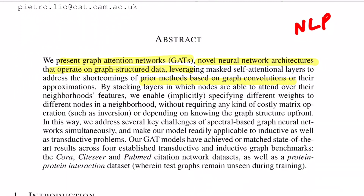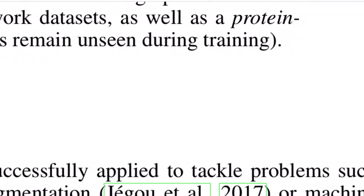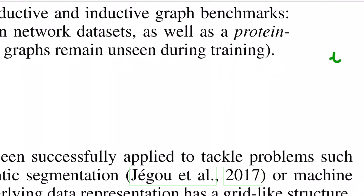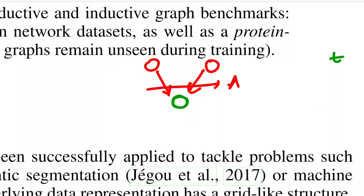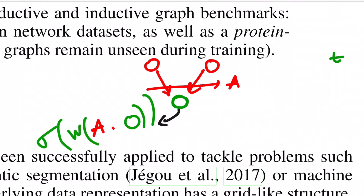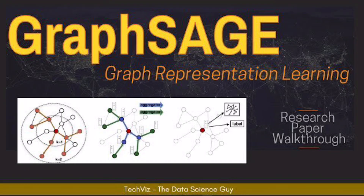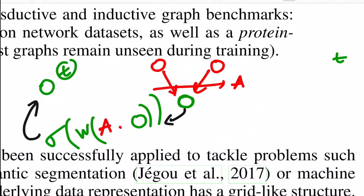Recalling the previous paper on this channel — GraphSage — at any hop T, for the node we are interested in, we perform an aggregation operation based on all the n-degree neighbors from the previous depth using some aggregator function. We then concatenate the embeddings from the previous level, do a transformation, and pass through a non-linearity to get a new representation for the central node. I'll link that video in the description and the i-button — make sure to check it out.